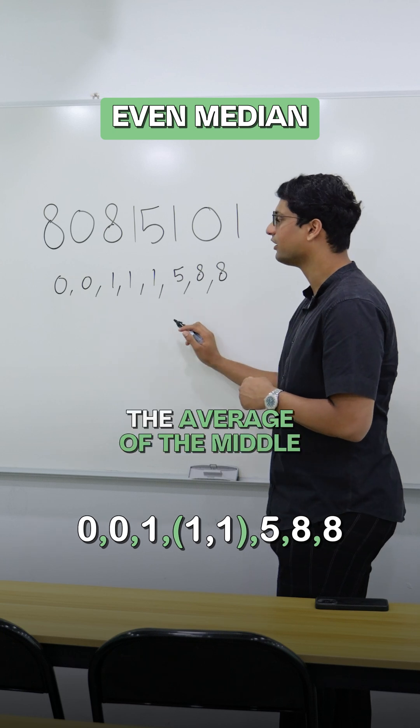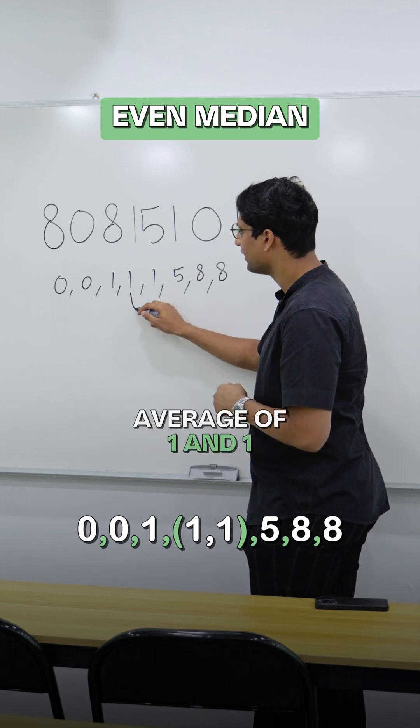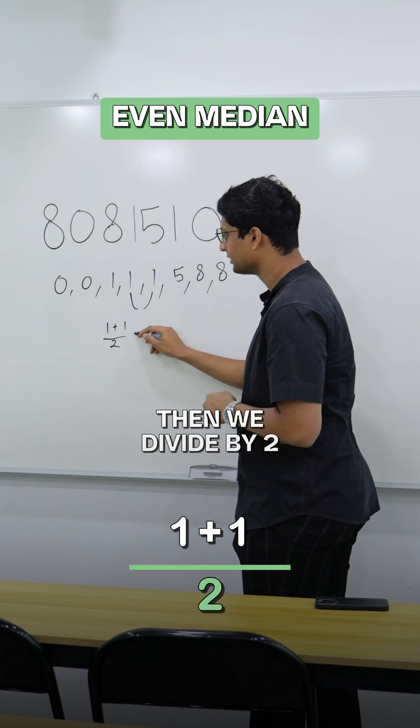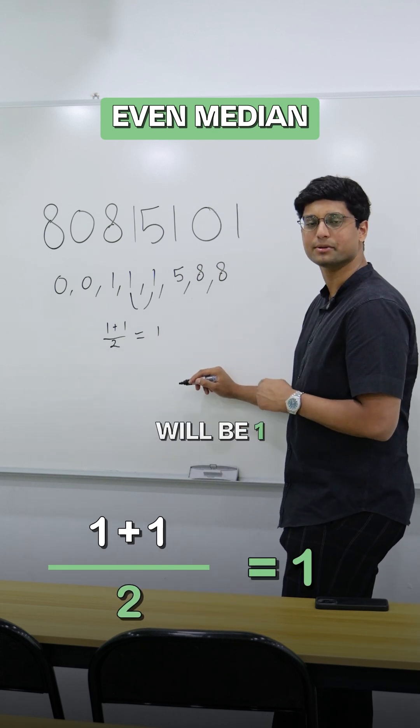we need to take the average of the middle two numbers. So we need to take the average of 1 and 1, then divide by 2. Therefore, my median will be 1.